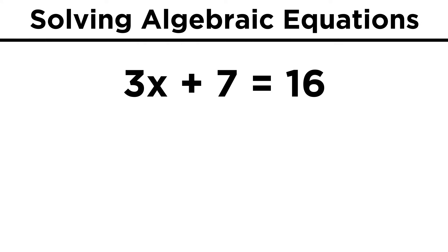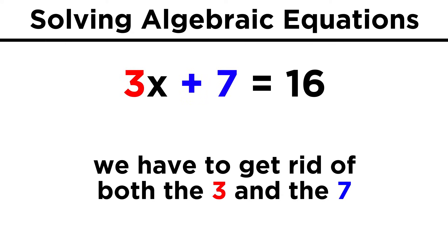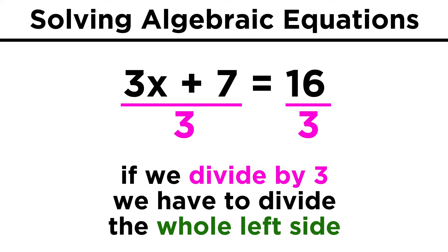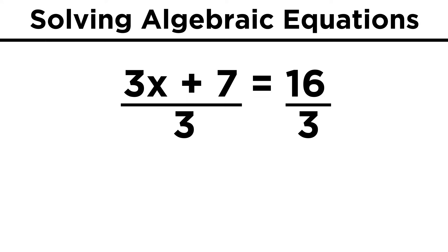If we have 3x + 7 = 16, we see that there are two things we have to do, since x is involved in both a product and a sum. But what do we do first? If we divide by three first, things get tricky, because we have to divide both sides by three, and on the left that means the whole side, not just 3x. So we would get (3x + 7)/3 = 16/3. That just made things worse.